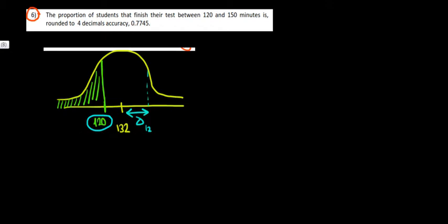We have the proportion of students who finished the test between 120 and 150 minutes. Meaning that we want the area between 120 and 150. And 150 is one standard deviation to the right of the mean. So 150 would be over here. What we're interested in is this area that we're shading right now.